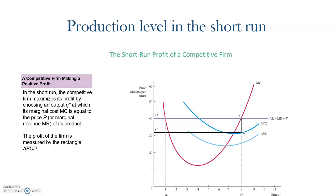In the last video, we also explained that to maximize the profits, the first order condition that has to be satisfied is that the price equals to the marginal cost. At the price of 40 dollars, we see that the marginal cost equals to this price here, where we produce 8 units of product.